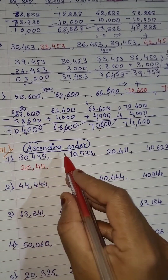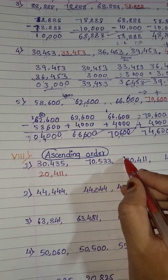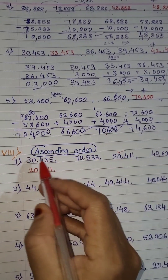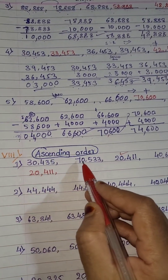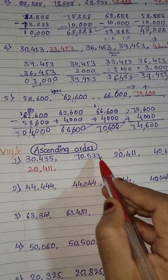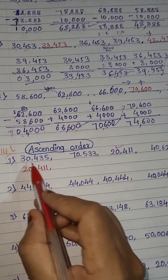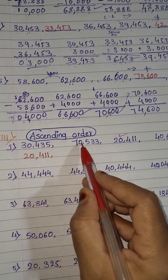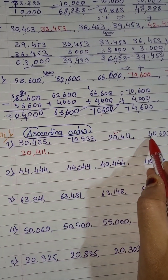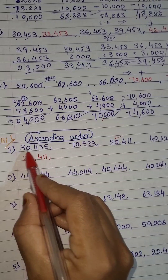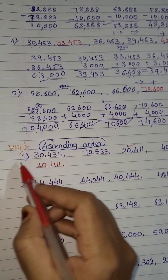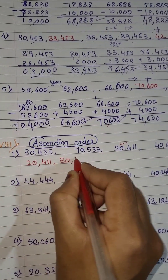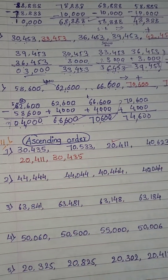After this, which is the smallest number? We have done 20,411. Now among 30,435, 70,533, and 40,623, you have to see the number in the highest place, that is the 10,000 place. Here it is 3, it is 7, and it is 4. So 3 is the smallest, meaning 30,435 is the next smallest number. So I will write 30,435.